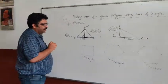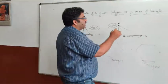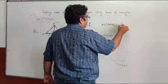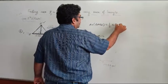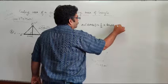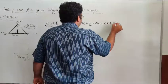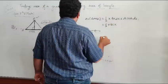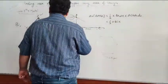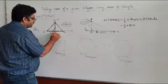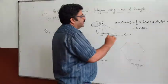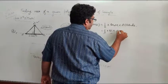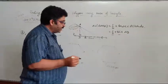What is the area of triangle ABC? Area of triangle ABC is half into base into altitude. Here, if I write base BC multiplied by the altitude — let us call this altitude as AD — then the area of triangle will be half times base times altitude AD. This is how we find the area of triangle.